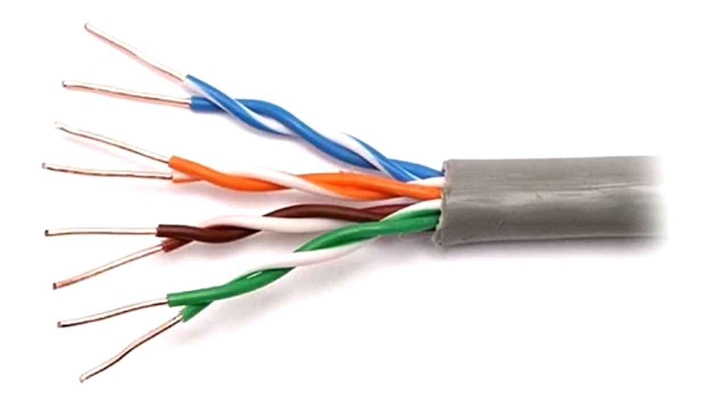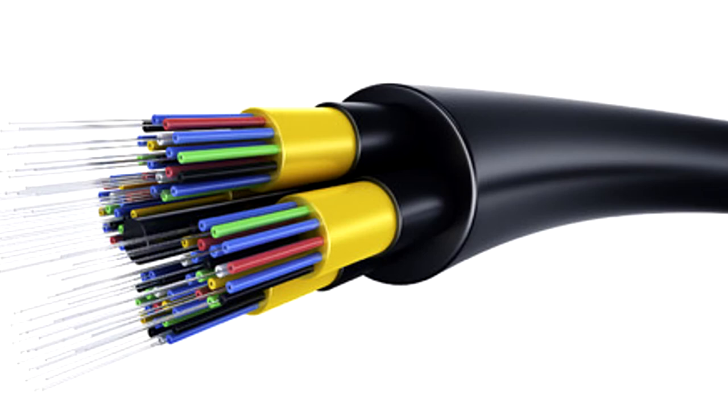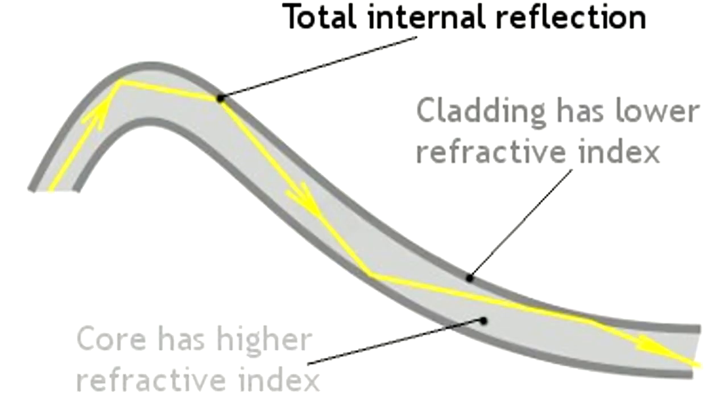A twisted pair cable maintains a higher bandwidth over longer distances by making use of eight cables twisted around each other to maintain signal integrity. These cables, while able to sustain a higher bandwidth over a longer distance, are considerably more expensive compared to their copper counterparts. For even higher bandwidth and distance potential, fiber optic cables can be used.